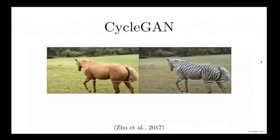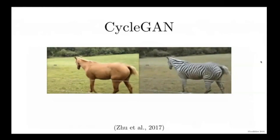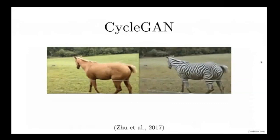Because horses are mostly photographed in green environments, like in Europe and North America, and zebras are mostly photographed in arid environments, like in Africa, we see that the CycleGAN actually changes the color of the grass in the background to make it look like it's in a drier climate where the zebra would live.